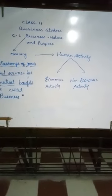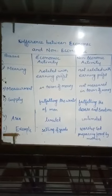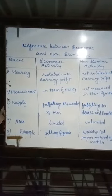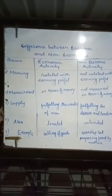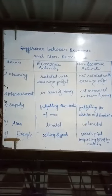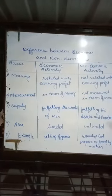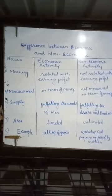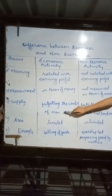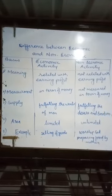We can broadly classify these concepts by learning their differences. The first basis is: economic activities are related with earning profit, and non-economic activities are not related with earning profit but are related with emotions and desires. Second point: economic activities are measured in terms of money, and non-economic activities are not measured in terms of money because they are related with emotions. Third point: economic activities fulfill the wants of man, but non-economic activities are related to fulfilling desires and emotions.